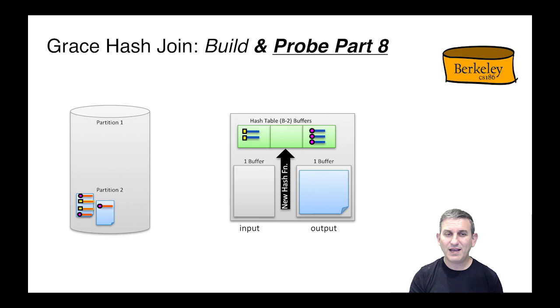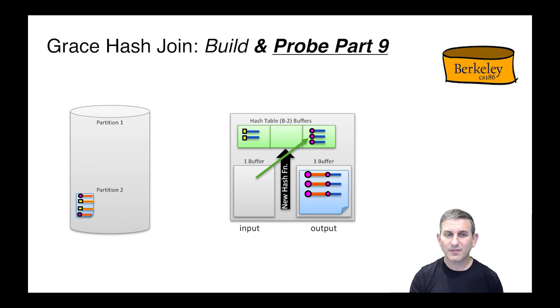The hash function in memory is going to make sure that all the matching tuples are in the same hash buckets in memory. Now we probe with pages of S. We form matches, concatenate them together, and put them in the output. Flushing the output, of course, whenever the output buffer is full.